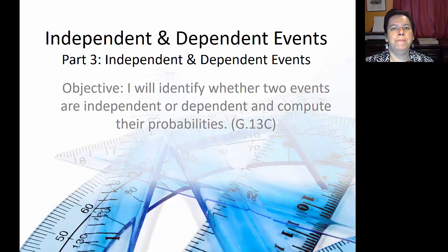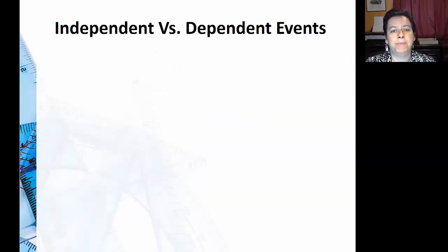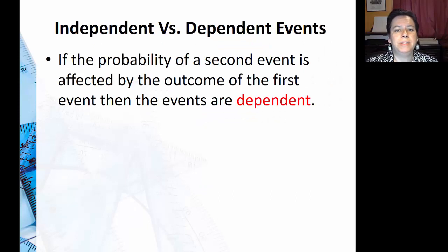We just saw how you can multiply probabilities for two events that occur. We're still going to keep doing the same thing, but now I'm going to look at not just independent events where it doesn't matter what happened on the first event. We're going to look at dependent events. If the probability of a second event is affected by the outcome of the first event, then the events are dependent.